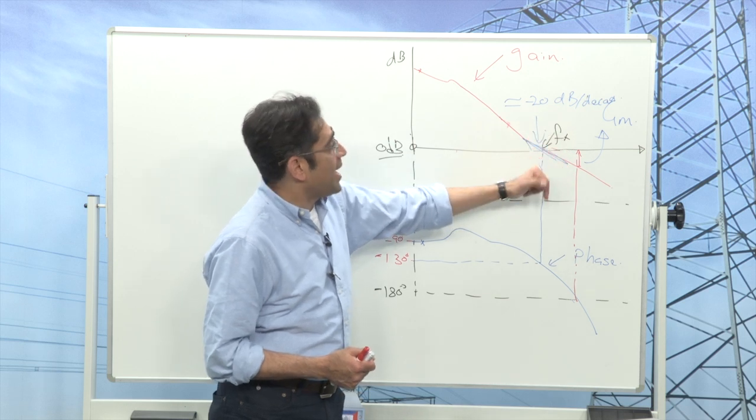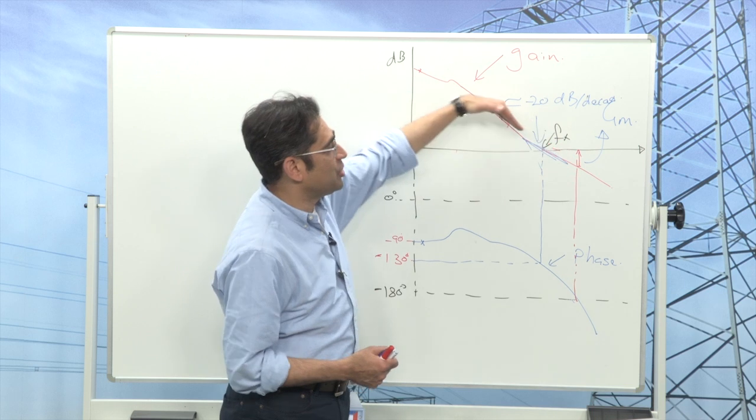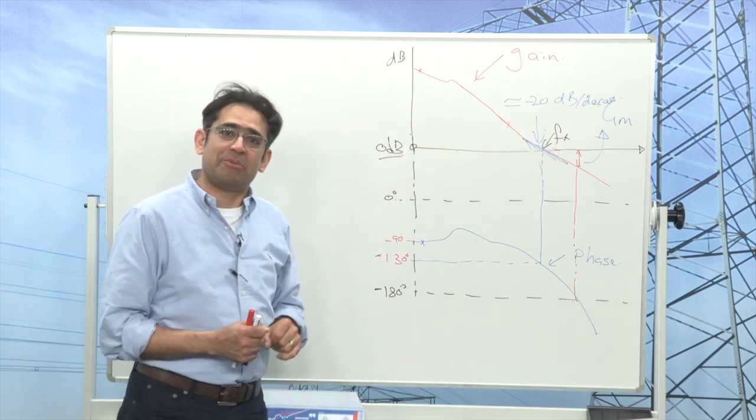We talked about the gain margin and also that we want the slope of the gain to be shallow as it crosses the zero dB axis.